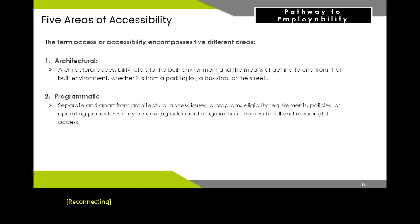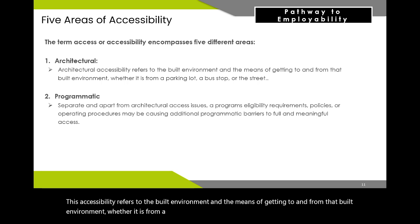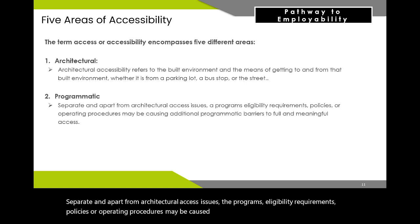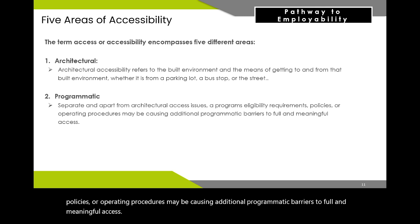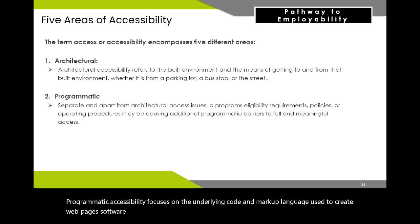The term accessibility encompasses five different areas. Number one, architectural accessibility involves creating physical spaces that are functional, safe, and inclusive for everyone regardless of abilities, including the built environment and means of getting to and from it. Number two, programmatic accessibility — separate from architectural access issues, a program's eligibility requirements, policies, or operating procedures may cause additional barriers. Programmatic accessibility focuses on the underlying code and markup language used to create web pages, software applications, and other digital content.